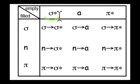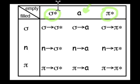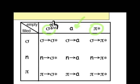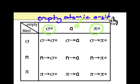Similarly, the possible empty combinations could be sigma-star, pi-star, or this thing that I've labeled A. What is A? It's an empty atomic orbital that's centered on an atom, like the p orbital in a carbocation.